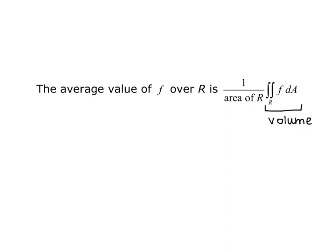The double integral over region R of f dA is the volume of the function over the region R, so essentially the average value equals volume over area. That makes sense because if we do volume divided by area, we get height, and the function f is the height.